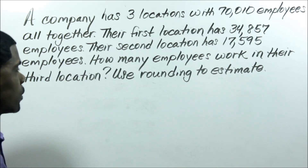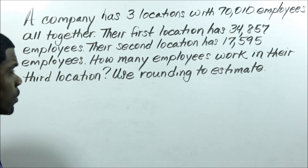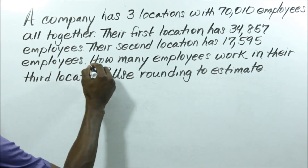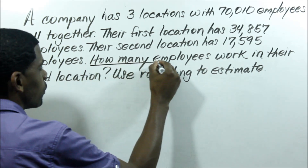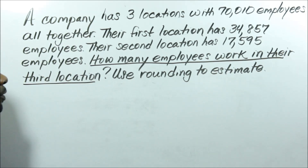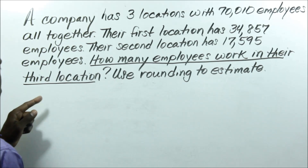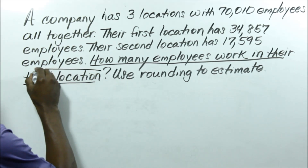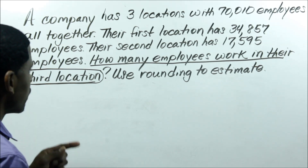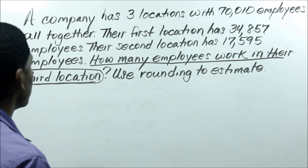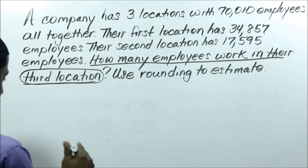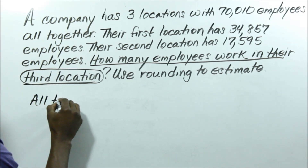We're going to use rounding to estimate. The first thing we need to consider is: what is the question? What do we need to find out for this word problem? What we need to find out is how many employees work in the third location — that is our focus. There are three locations and 70,010 employees all together — I'll make a mental note: all together.